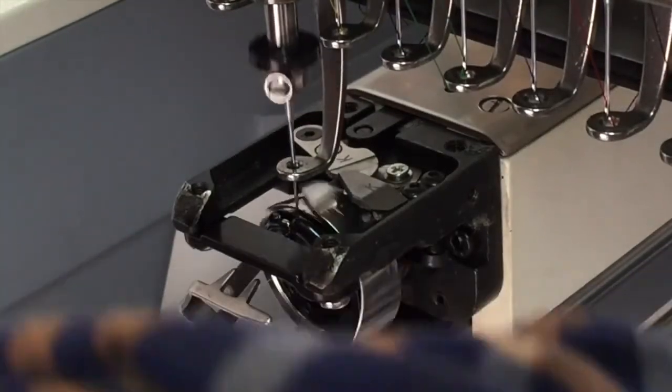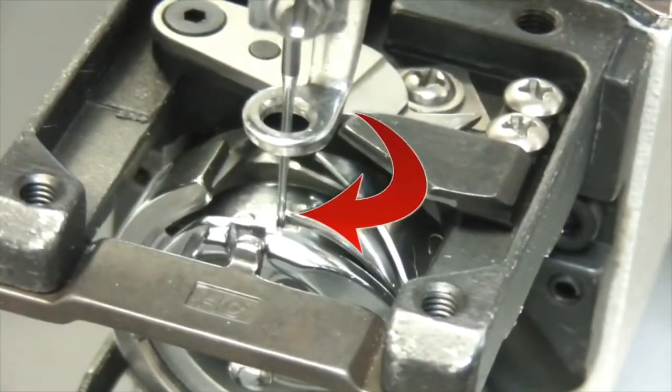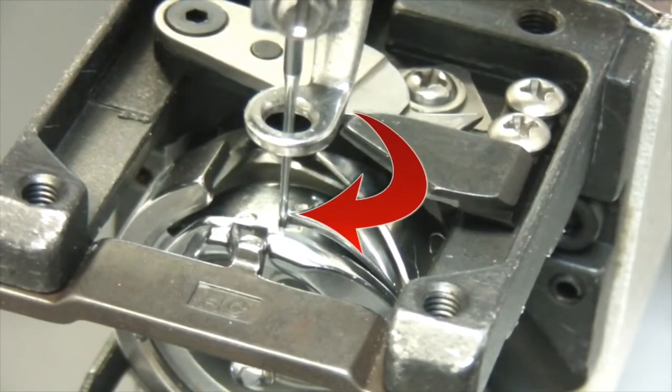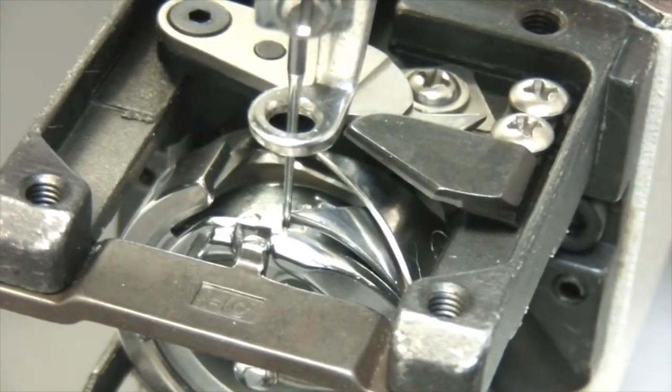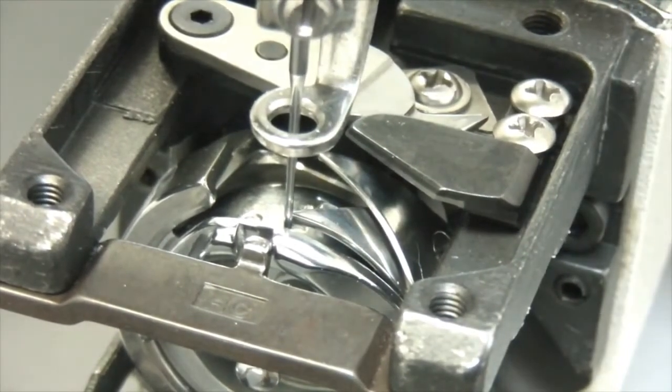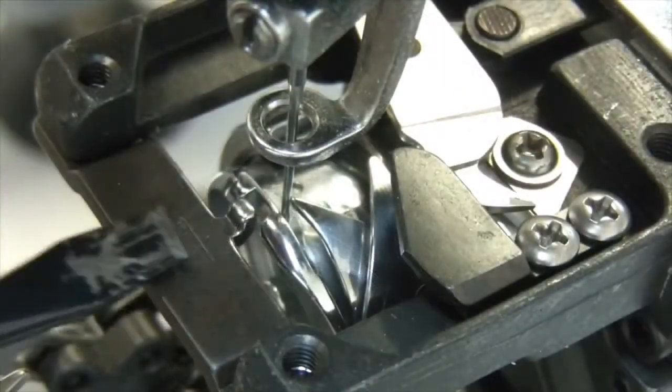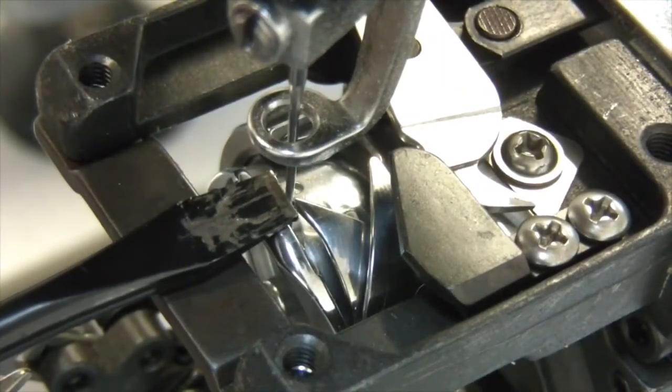I just want to remind you that the tip of the rotary hook goes at the back of the needle, as close as possible but not touching. This is how you can test to see if you have a gap between the tip of the rotary hook and the needle.